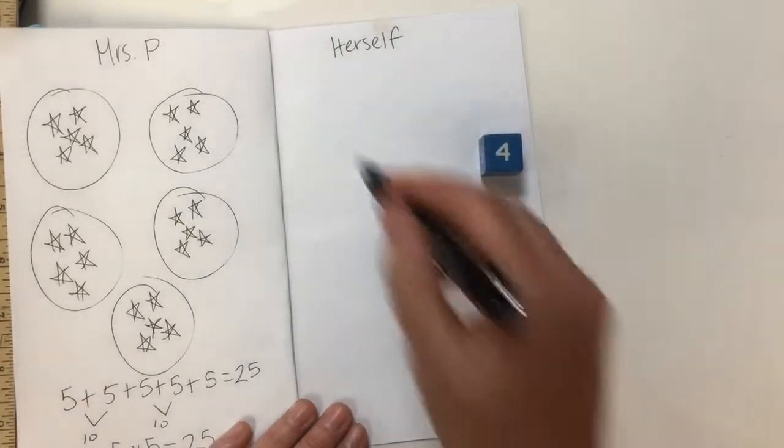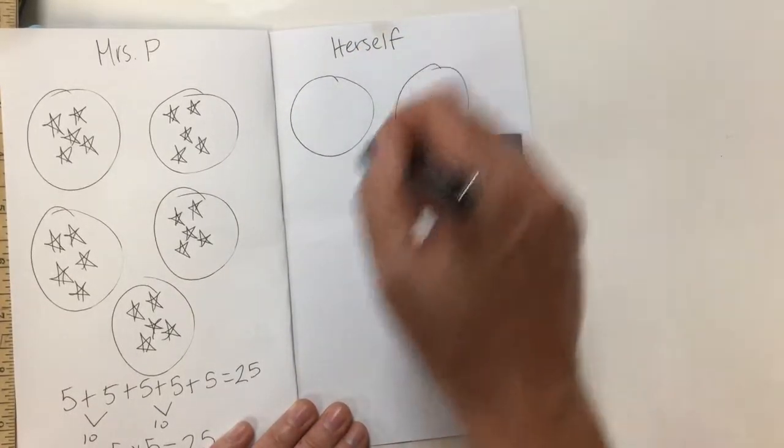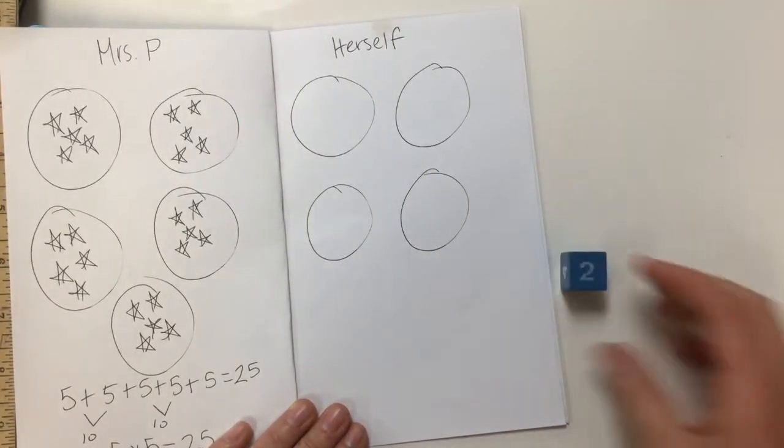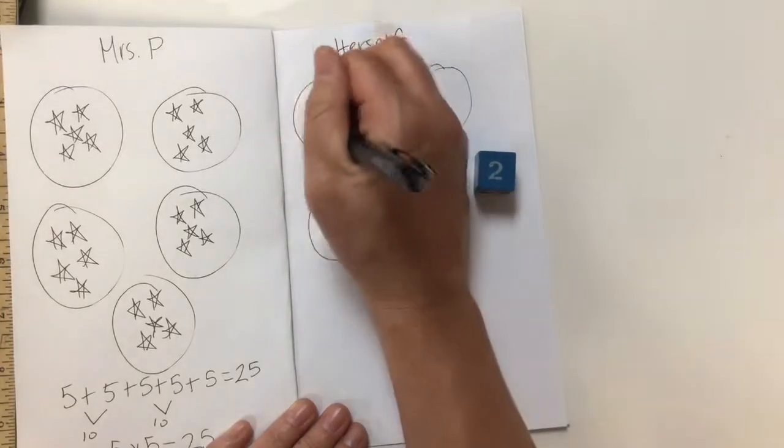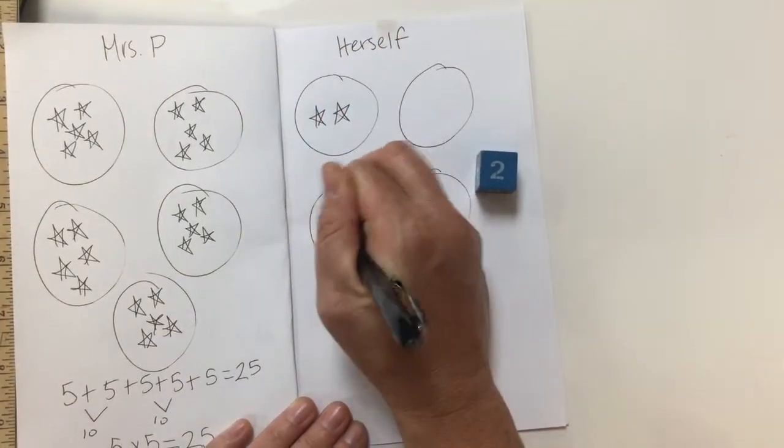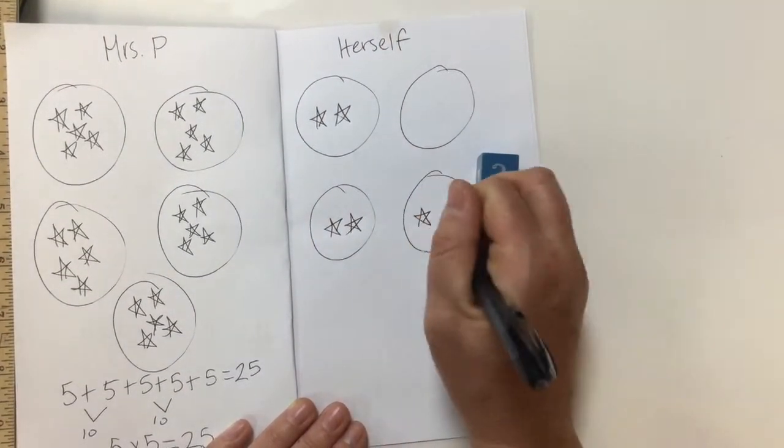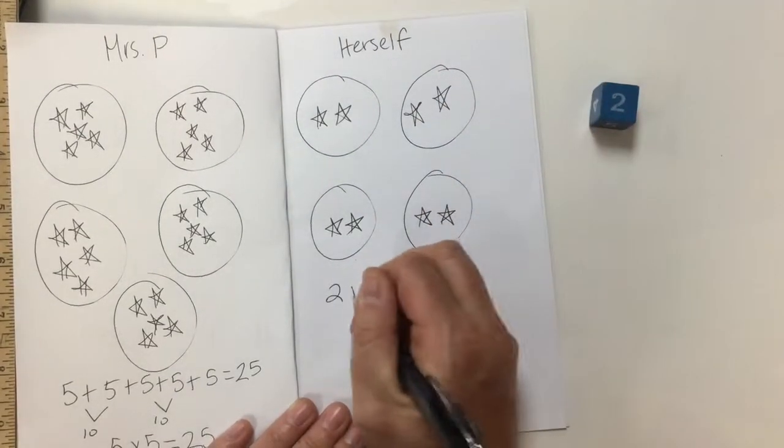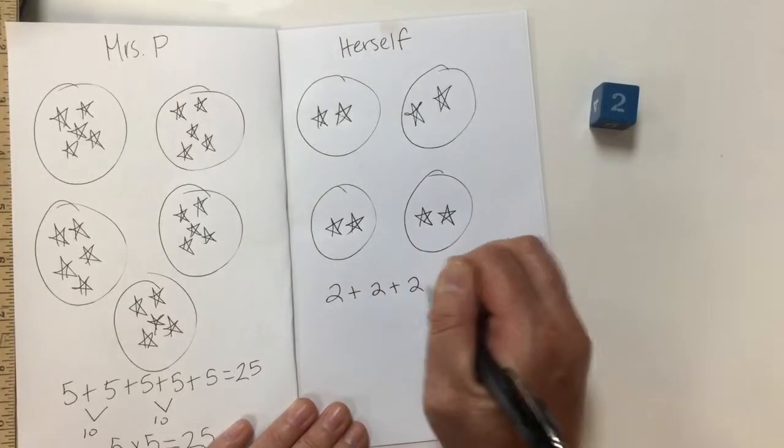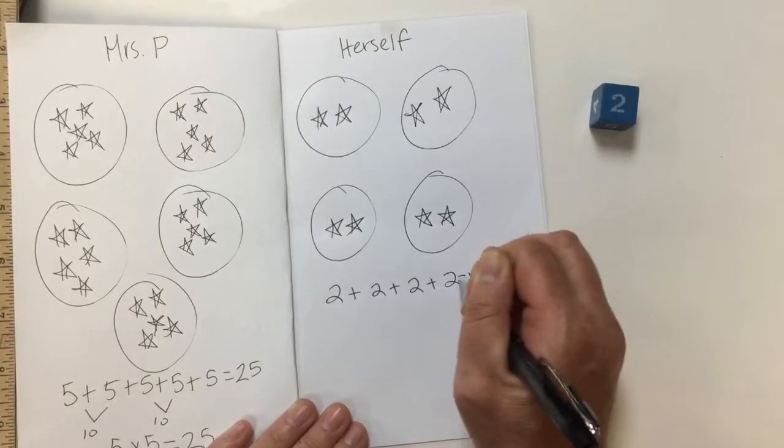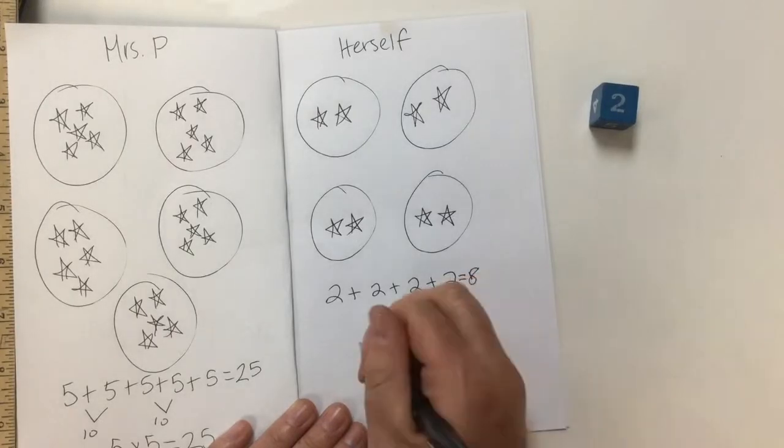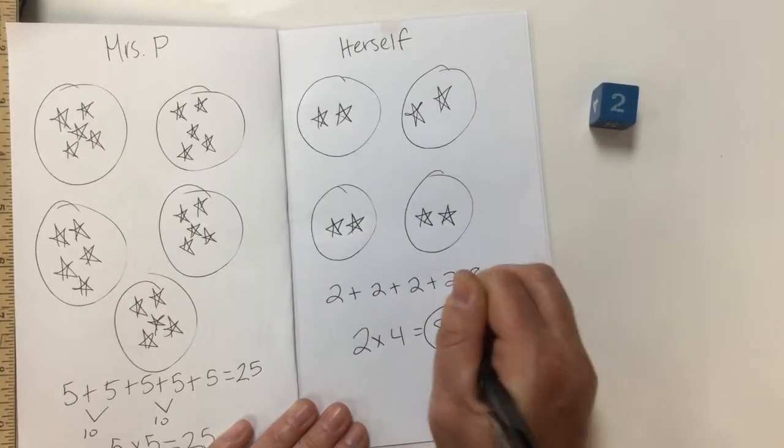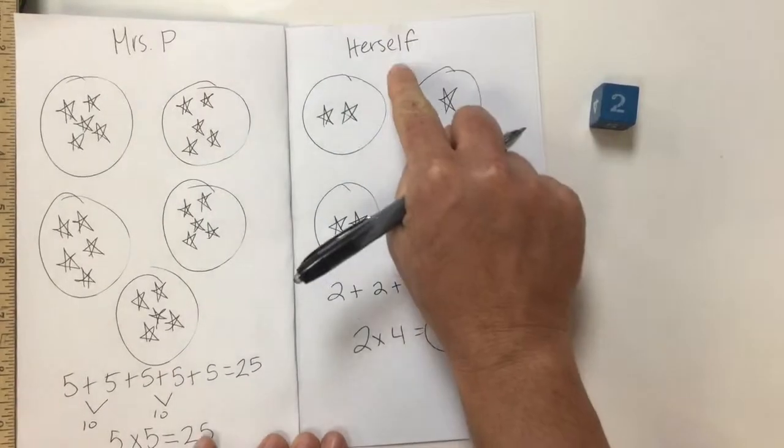Four. So remember that's how many circles I draw first or herself draws first. And then they roll again. And that's how many stars go in each. Remember that word each is really important. Okay, you do your repeated addition sentence. And then your multiplication sentence. Okay, and that's how many points herself scored this round.